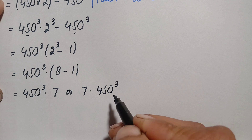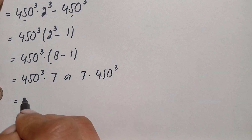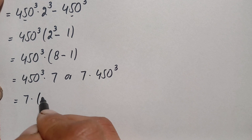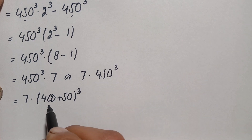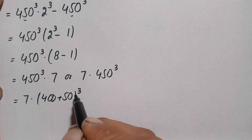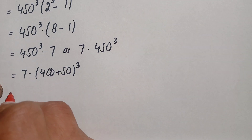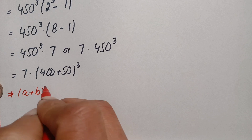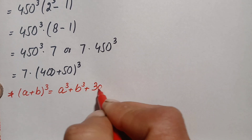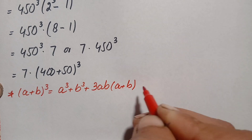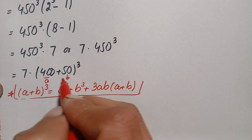Here we will find out this value without using a calculator and without any rough work. We write it as 7 times (400 + 50)³, since 450 = 400 + 50. Now we will use the cubic algebraic identity: (a + b)³ = a³ + b³ + 3ab(a + b), where a = 400 and b = 50.